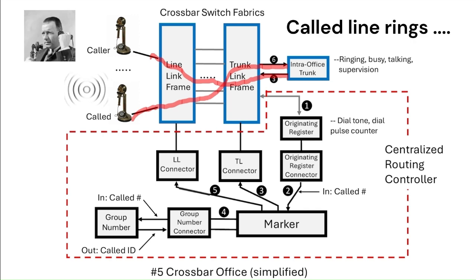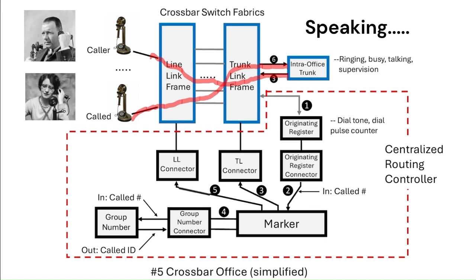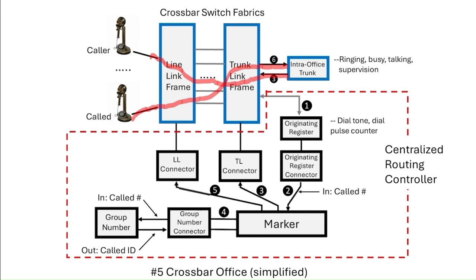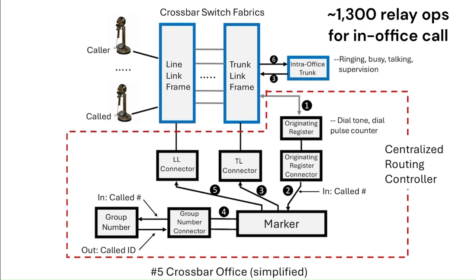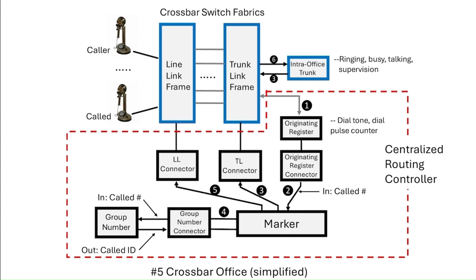If the caller answers, the conversation begins. When the call is complete, all the crossbar connections are released and the inter-office trunk is freed. The inter-office trunk provides ringing signals, ringing tone to the subscriber, and monitors the call. A typical intra-office call requires about 1,300 relay operations. This coverage just scratches the surface of call setup. Check out the site calling315.com to learn more about electromechanical switching and crossbar operations.